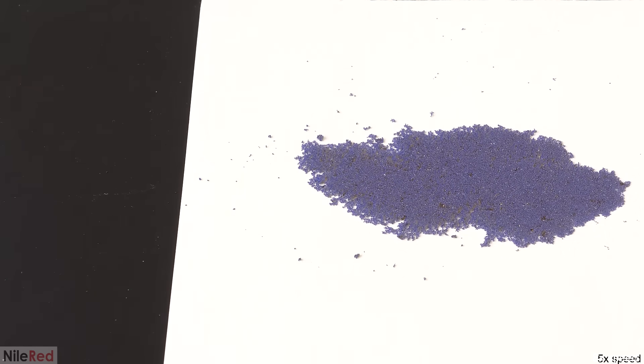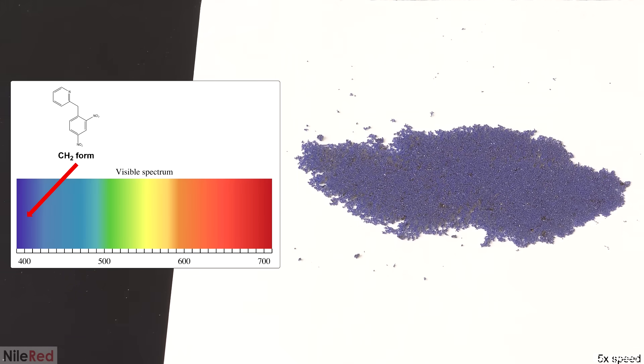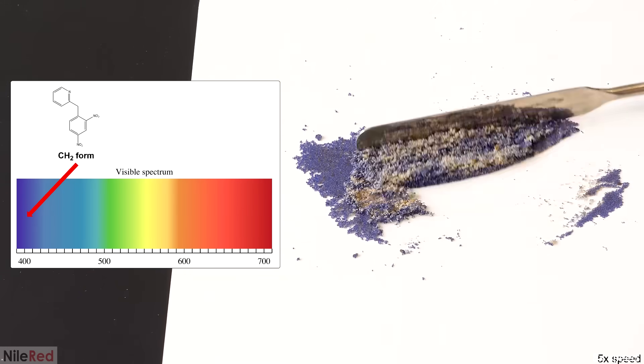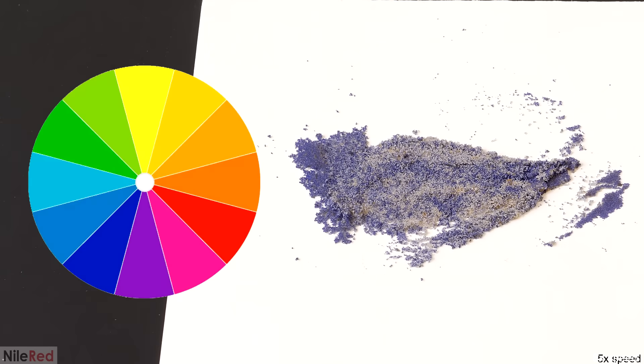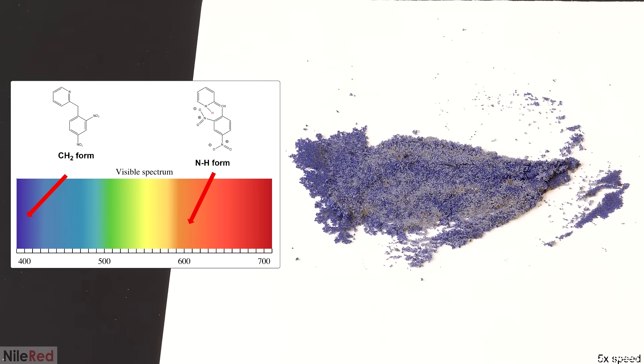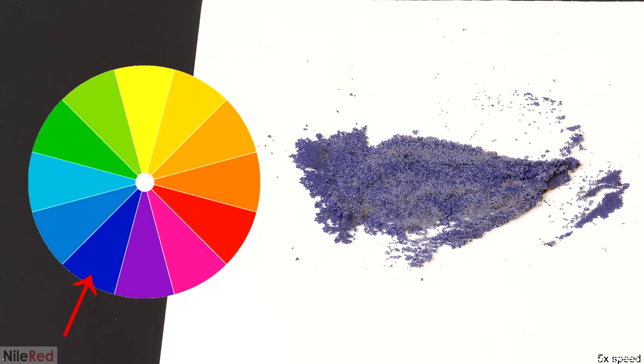The reason it changes color is because the NH form has a different absorption spectrum. In its initial form, it mostly absorbed light around 400 nanometers, which is a deep violet. Most of the light that it doesn't absorb is reflected, though, and it's what we see. To predict what this color should be, I can just take a look at a complementary color wheel, and I quickly see that its complement is yellow. The NH form instead absorbs light around 600 nanometers, which is a light orange. And now, if I take another look at the color wheel, I see that the complement of this is a dark blue.